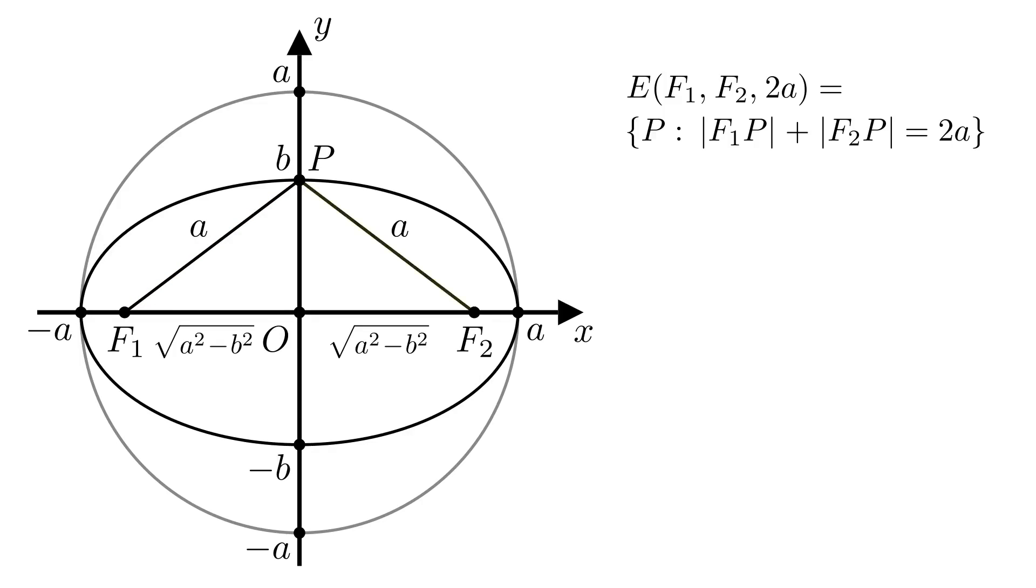So |F1P| plus |F2P| is equal to 2a for this particular point P. To show that it's also true for other points of the shrunken circle, we'll need the corresponding point of the original circle which we'll denote by P'. Since we shrank the circle in the y-direction, then the x-coordinates of P and P' are the same.